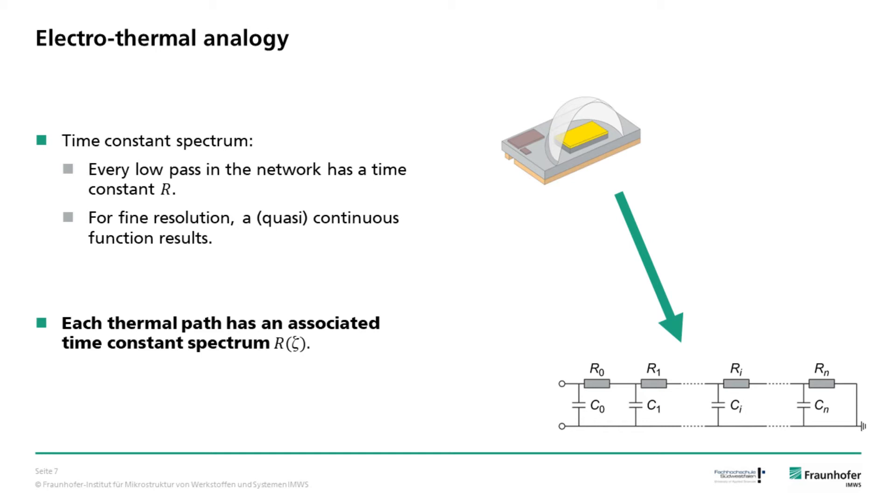This is the time scale it takes to charge or discharge the capacitors. If we now divide the heat path into a large number of segments, we will also get a large number of time constants. These time constants form the time constant spectrum, which fully describes the thermal properties of the heat path.